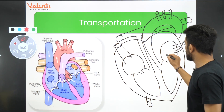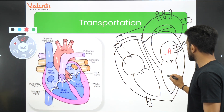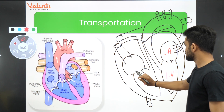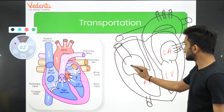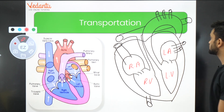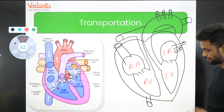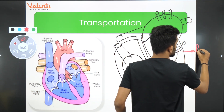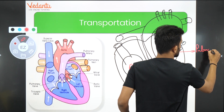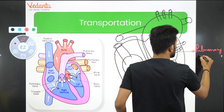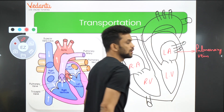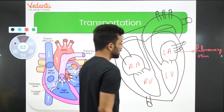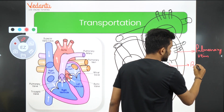Now let's label it guys. This is my left atrium. This is my left ventricle. This is my right atrium. This is my right ventricle. What are these pipes called as guys? Help me label them. This is the pulmonary vein — it is the only vein which carries oxygenated blood.